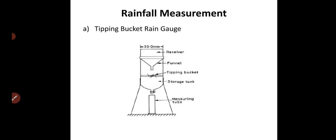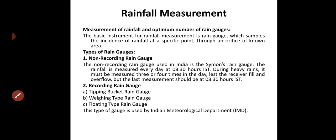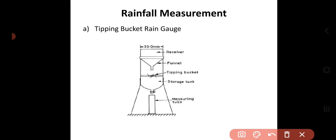The first is the tipping bucket rain gauge. This type of automatic rain gauge was suggested by the United States. The rain gauge is kept on the ground where there are no obstructions. There are site selection criteria for keeping rain gauges — the site should be clear and should not be surrounded by buildings or large trees, so that rainfall falls easily into the bucket.